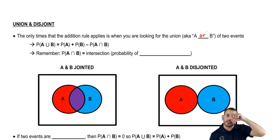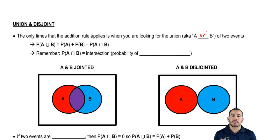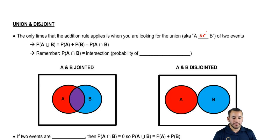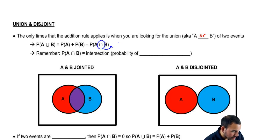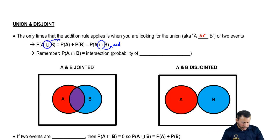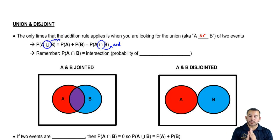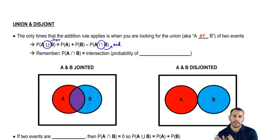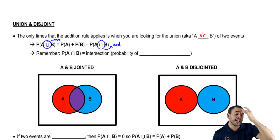So the notation is: P(A∪B) equals P(A) plus P(B) minus P(A∩B). And what was the upside down u? The upside down u is 'and,' and the regular u is 'or.' So the probability of A or B is the probability of A plus the probability of B minus the probability of A and B.